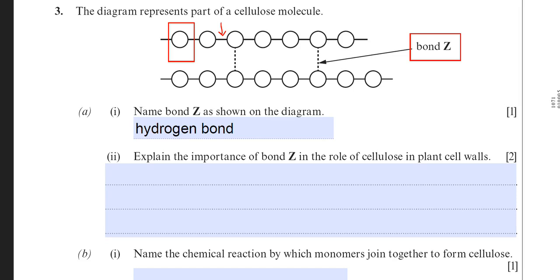The next question then, A2, is asking you to explain the importance of bond Z in the role of cellulose in plant cell walls. So as I said earlier, this bond is very important. One thing that you can say here is the fact that bond Z, the hydrogen bond, holds the chains of beta-glucose together.